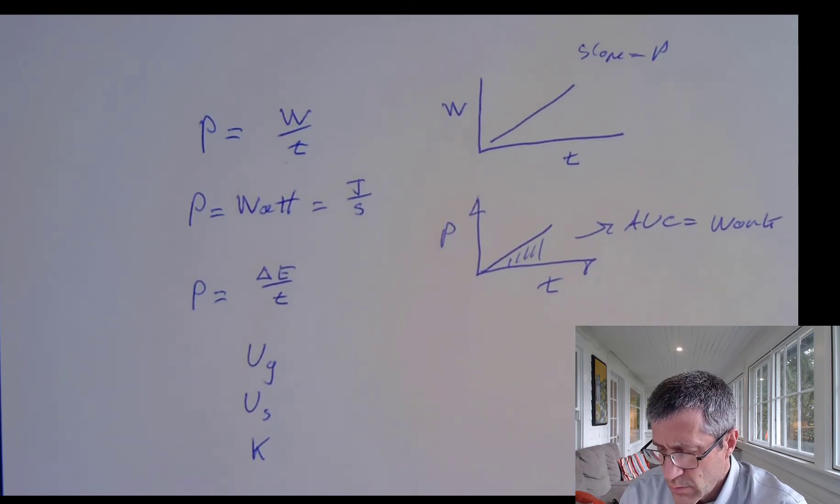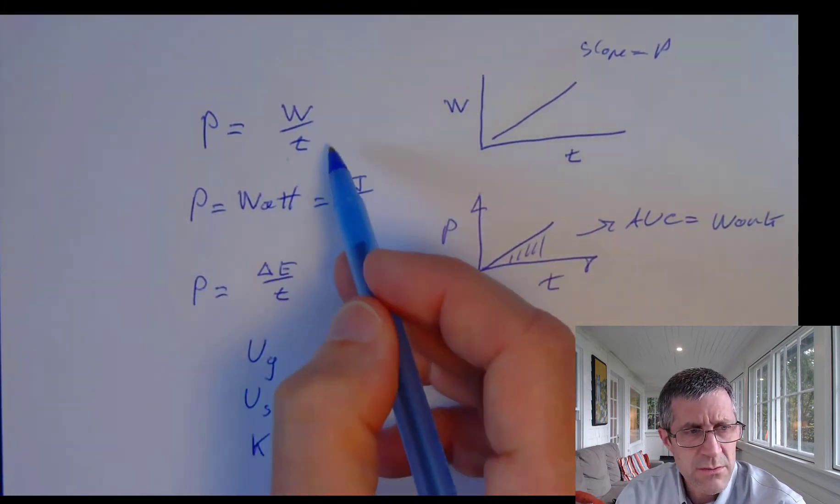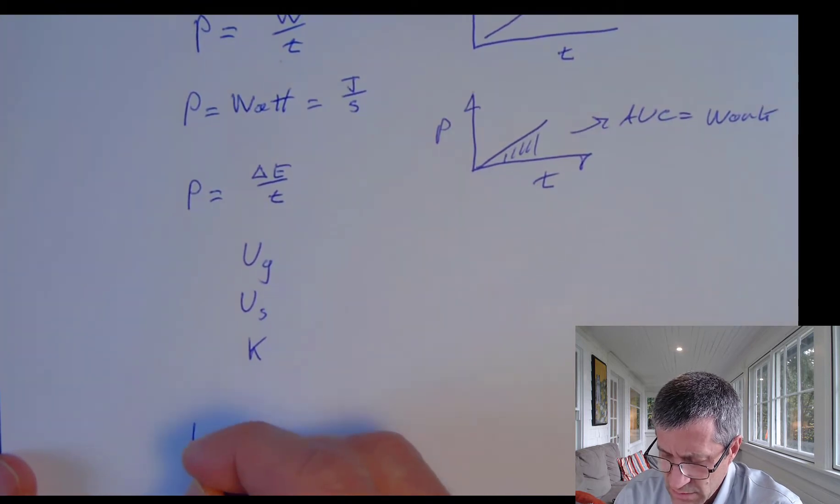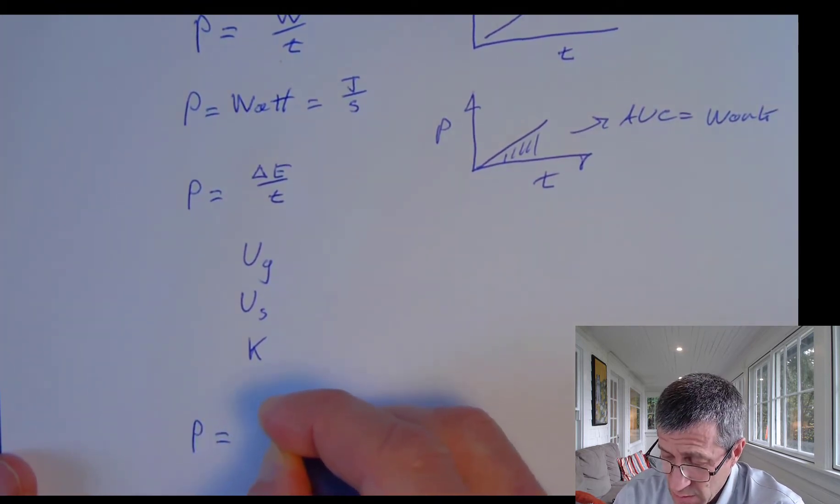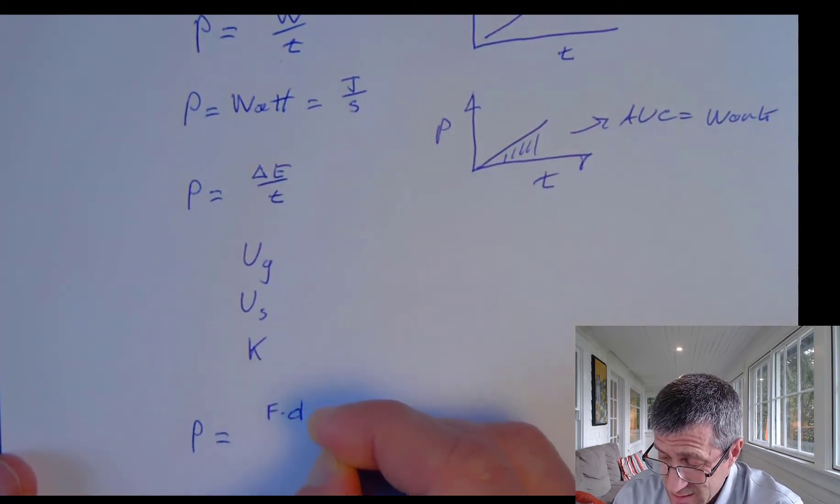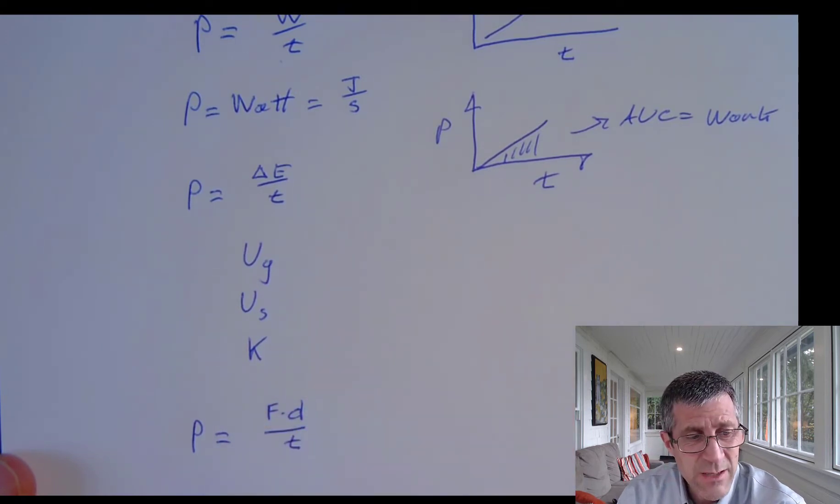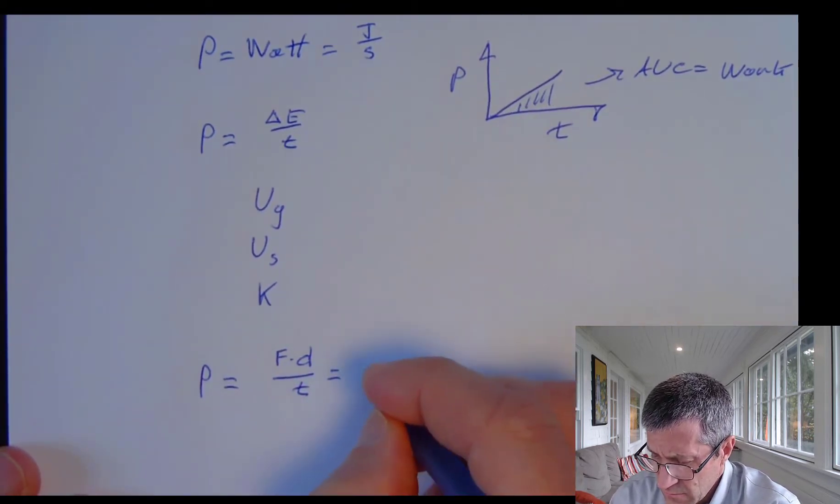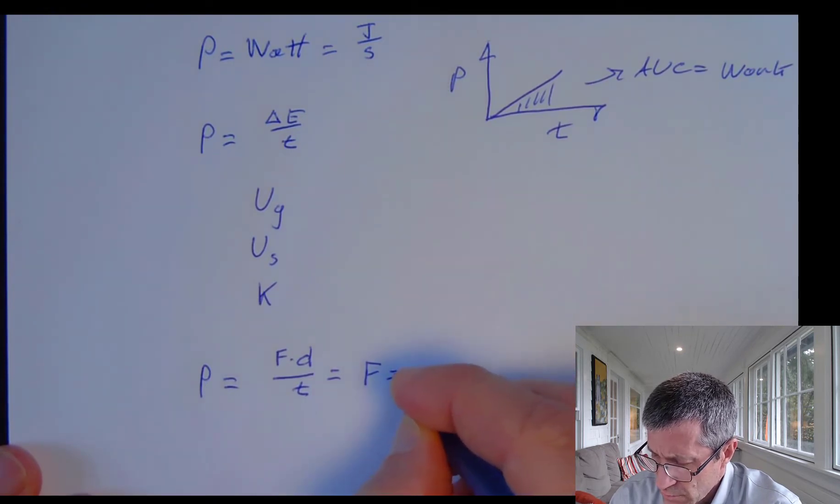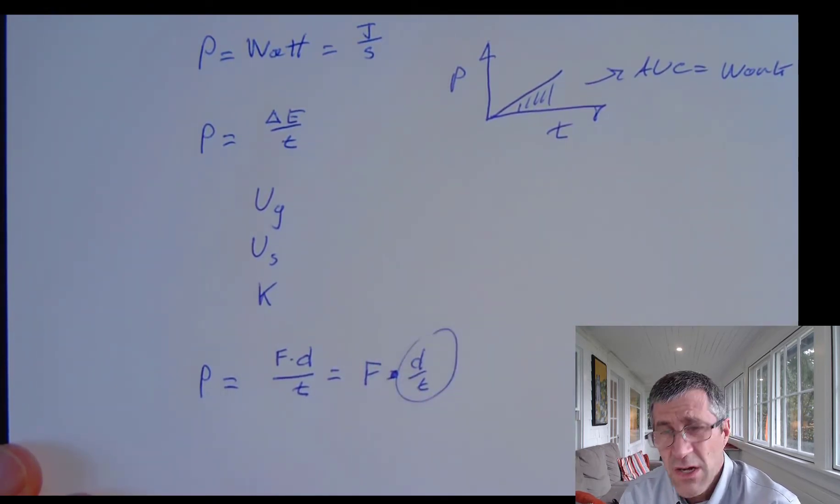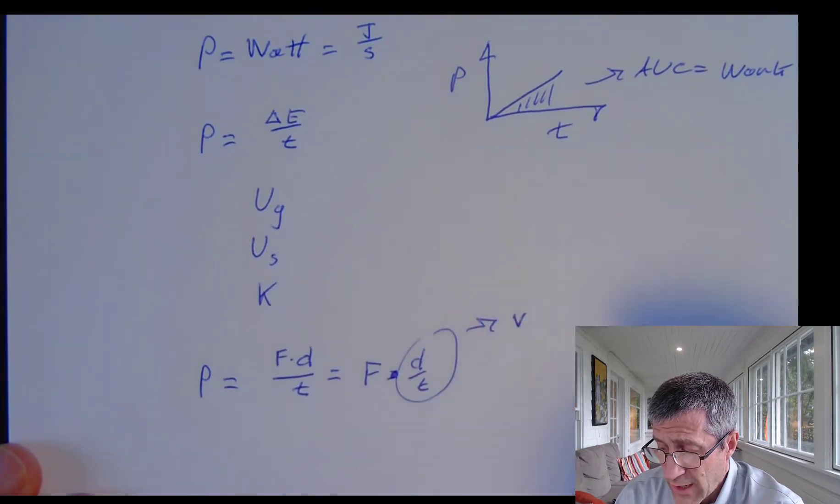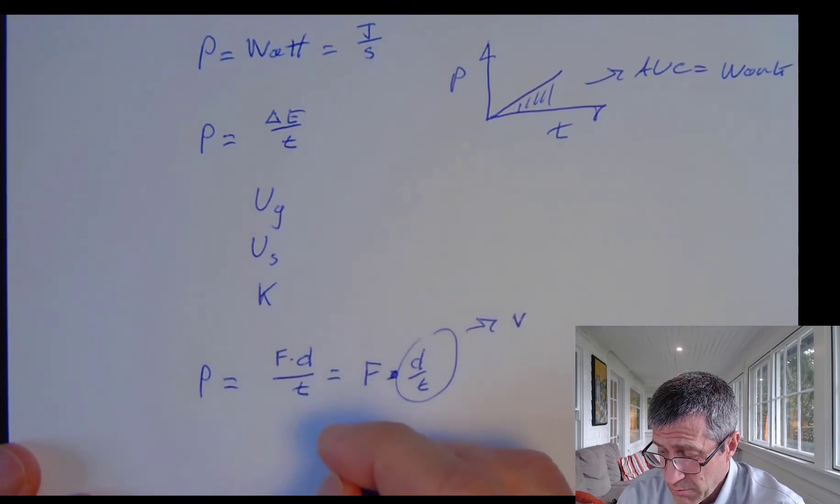Second thing we have is another way of thinking about this. I'm going to think about work as being force times distance. So if I set my power equal to force times distance over time - well, force times distance over time - and distance over time, we recognize this hopefully as velocity. So we have a second way of thinking about power - if I have something supplying a constant force at a constant velocity.